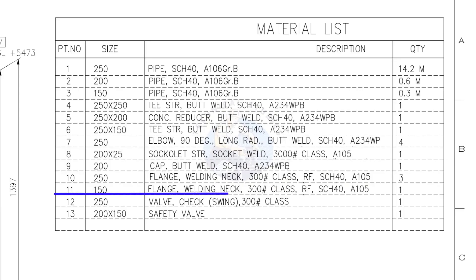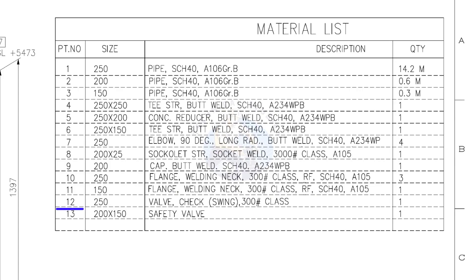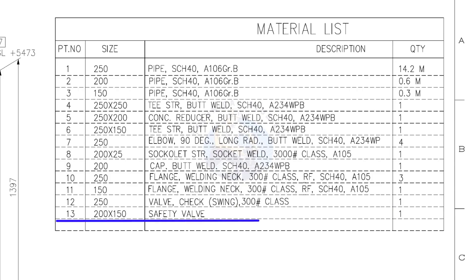Item number 11: 150 NB, weld neck flange, class 300 pound, raised face, schedule 40. Quantity: 1. Item number 12: 250 NB, check valve, swing type, class 300 pound. Quantity: 1. Item number 13: 200 into 150, safety valve. Quantity: 1.